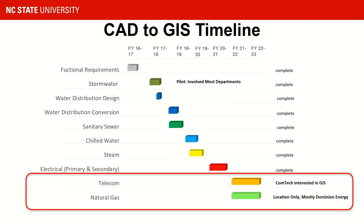We had a timeline getting from CAD to GIS. We started with stormwater as our first utility — that was our pilot. It involved my department, our environmental health and safety group, and our grounds group, and was a good test bed for how different groups could contribute data. From there, we converted water, then sanitary sewer, chilled water, steam, and primary and secondary electric. Our telecom is managed by a different department but they're interested in GIS, and natural gas is our smallest system, mostly maintained by Dominion Energy.